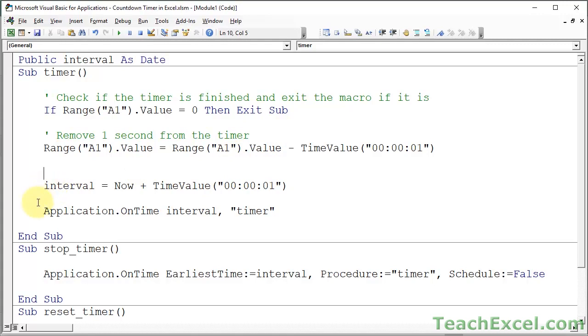So we get to the end of the macro, this application dot on time thing, which I'll mention in a moment. And that will rerun the timer macro. Okay, well how often would we like to rerun it? That's what the interval is for.